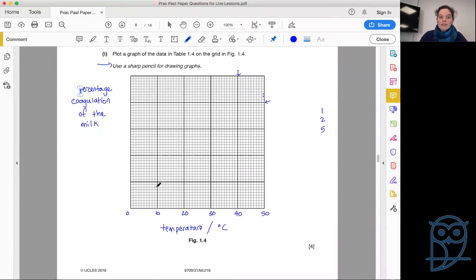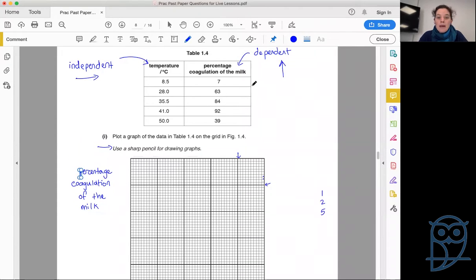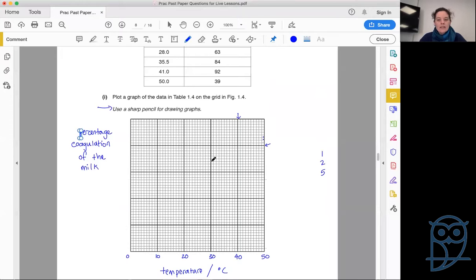Looking at our vertical axis, seven is our lowest but in biology we always start at zero. Our highest is 92 so we probably have to go up to 100. Tens isn't going to work, so can we count in 20s? 20, 40, 60, 80, 100 - it's perfect. This would be 20, 40, 60, 80, and 100.